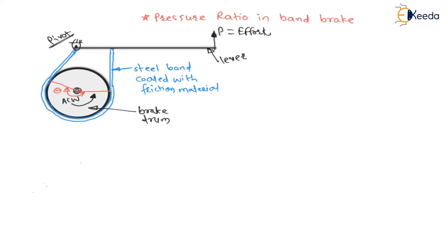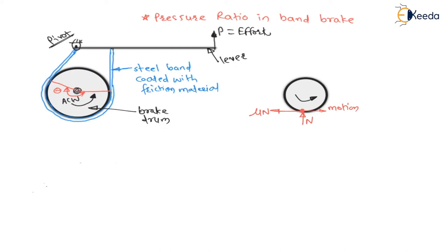Now for such type of loading, we have already seen the direction of tight side and slack side. Consider the brake drum with anti-clockwise rotation. Due to this rotation, there is a normal reaction on the brake drum from the steel band. The point where normal reaction acts is moving to the right, so the frictional force — which is mu times N, where mu is the coefficient of friction between steel band and brake drum — acts towards the left on the brake drum.